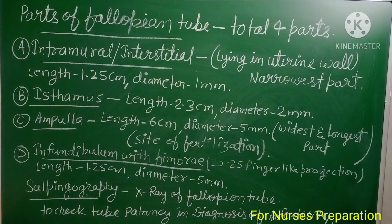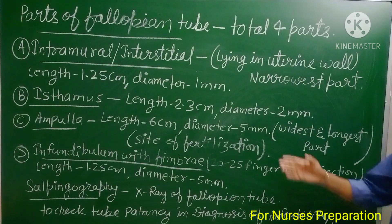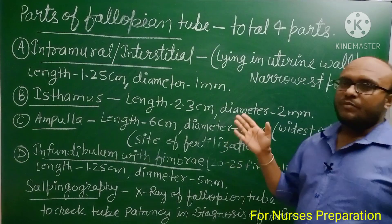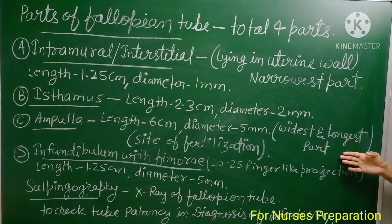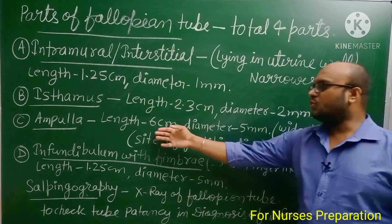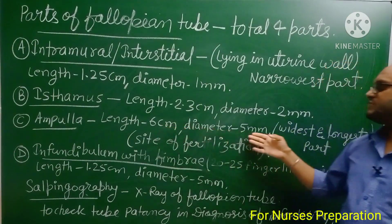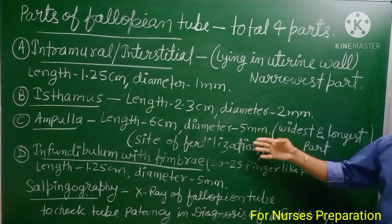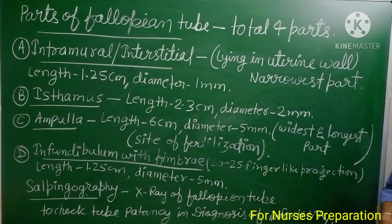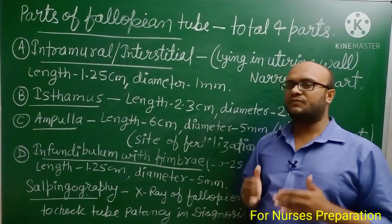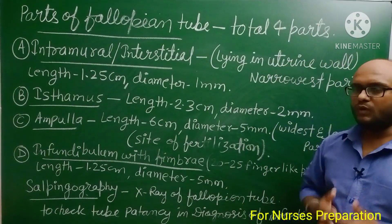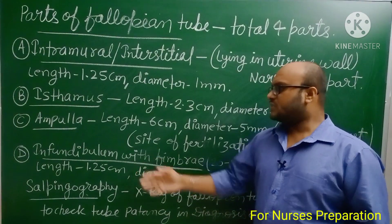The third part is the ampulla, which is very important and frequently asked about in exams. The ampulla is the widest and longest part of the fallopian tube, with a total length of approximately 6 centimeters and a diameter of 5 mm. It is also known as the site of fertilization — the process where the male gamete (sperm) combines with the female gamete (ovum) to form a zygote.